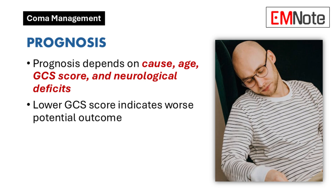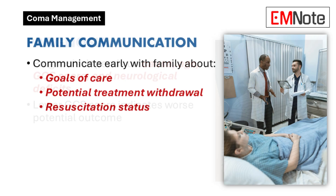Prognosis in non-traumatic coma patients is influenced by several factors, including the underlying cause, age, GCS score, and the presence of focal neurological deficits. Patients with a lower Glasgow Coma Scale score at presentation generally have a worse prognosis. Early communication with the patient's family or legal representatives is vital to discuss goals of care, potential withdrawal of treatment, and resuscitation status, especially when the prognosis is poor.